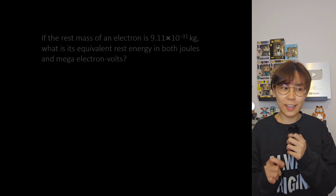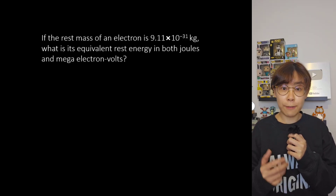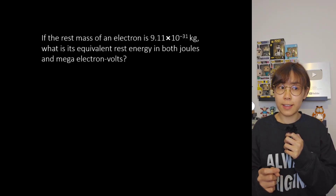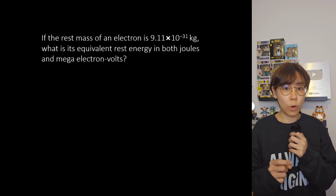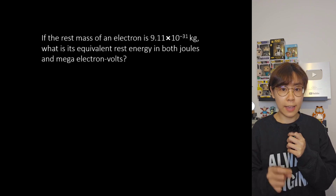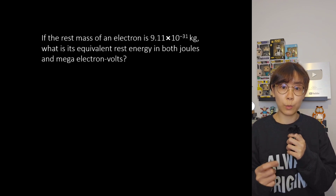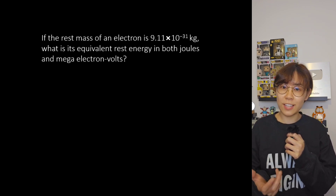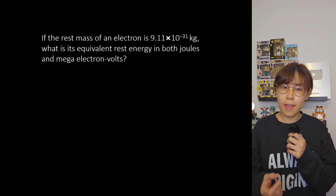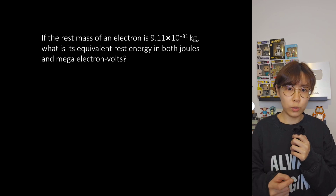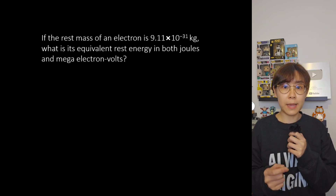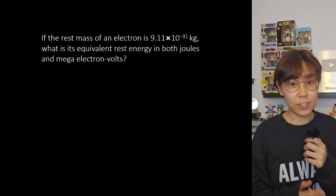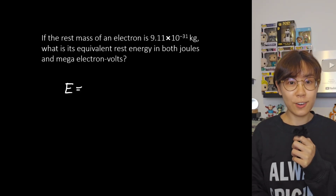Let's look at an example calculation. If the rest mass of an electron is 9.11 times 10 to the minus 31 kilograms, what is the equivalent rest energy in both joules and mega electron volts? Let's use the equation E equals mc squared.